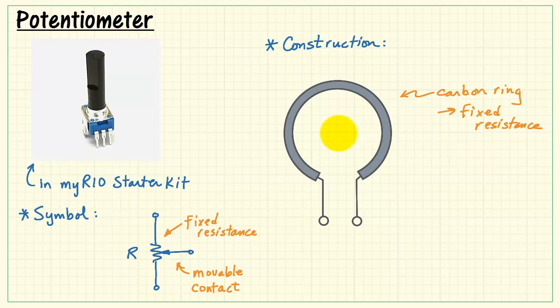Then the center terminal corresponds to a movable contact. And this movable contact is attached at one side to our third terminal, and on the other is in contact with the carbon ring.